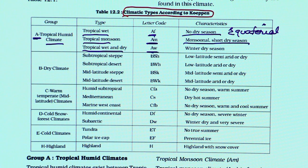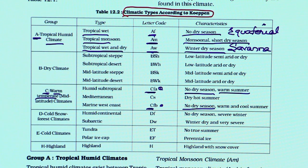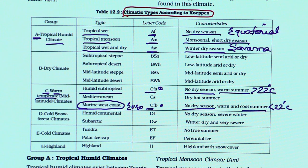Looking at Köppen's alphabetical symbols in the NCRT table: AF is tropical humid climate — equatorial — with no dry season. AM is tropical monsoonal, with a short dry season and more than 70% of annual rain confined to 3 to 4 months of the year. AW is tropical wet-dry, with dry winters — popularly called savannah climate.